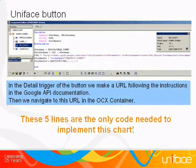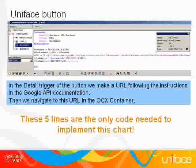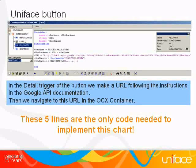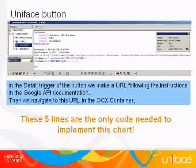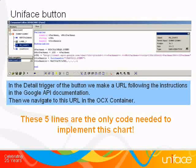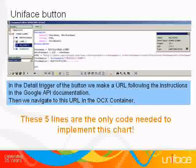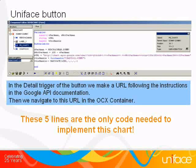In the detailed trigger of the button, we put a couple of lines of code. First we construct the URL for the chart according to the API documentation found on the Google website. Then we instruct the web browser in the OCX container to navigate to this URL. And this is all the code we need for this example.